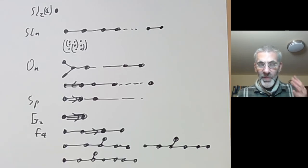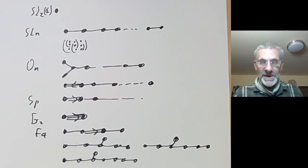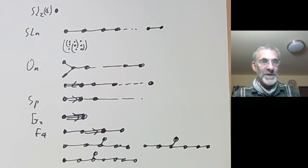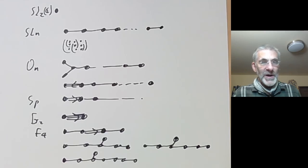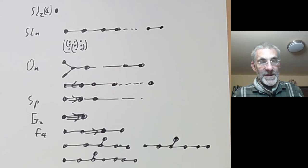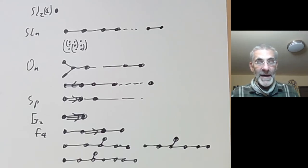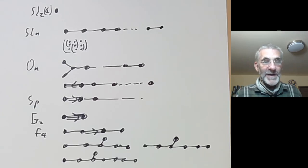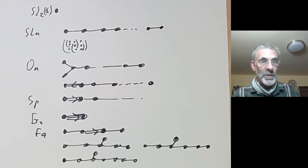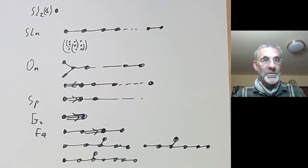One of the problems with Lie Groups is that they're rather complicated as topological manifolds — they have very complicated topology. You can simplify things greatly by instead looking at the tangent space, which is what we'll discuss in the next lecture, where we find that the tangent space of a Lie Group at the origin is something called a Lie Algebra.